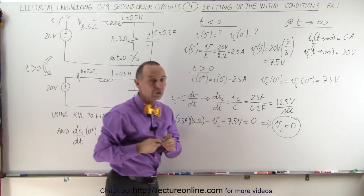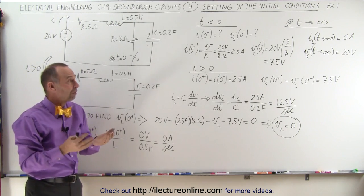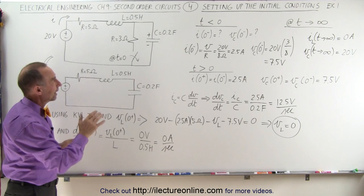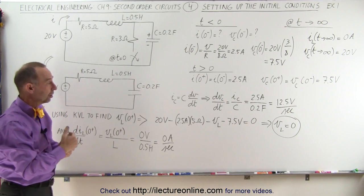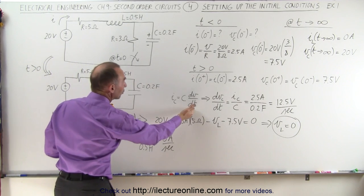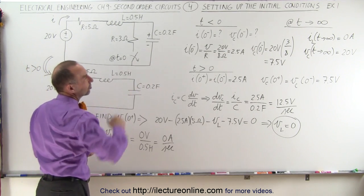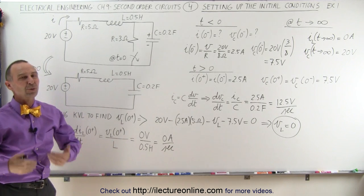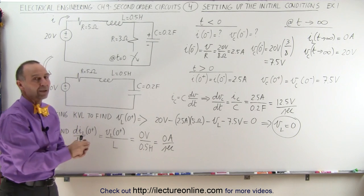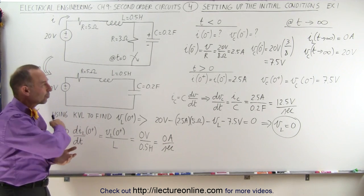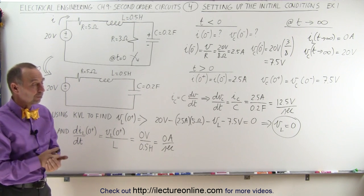That's the key to solving second order circuits: find the current and voltage before the switch opens or closes, the current and voltage right after, the rate of change of voltage across the capacitor and rate of change of current through the inductor, and then the final steady-state current and voltage. Once you've done that, you're ready to solve the differential equation and write the equations describing current and voltage as a function of time throughout and after the transient period.